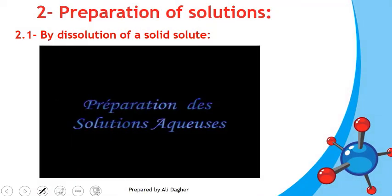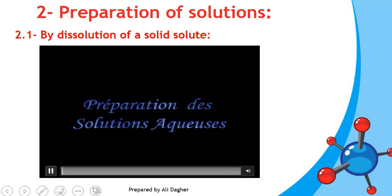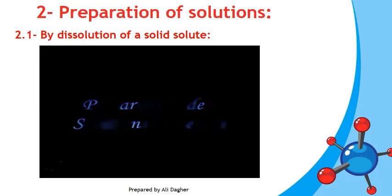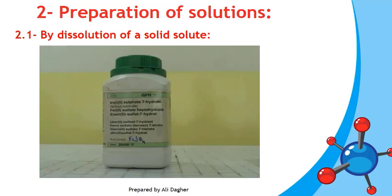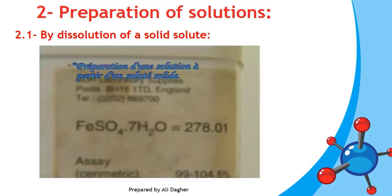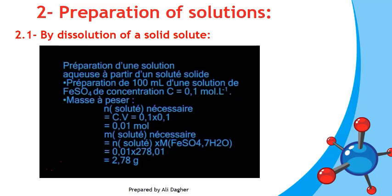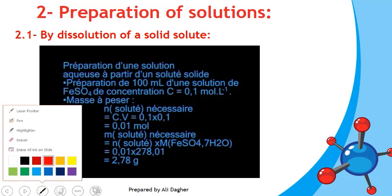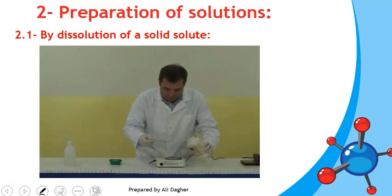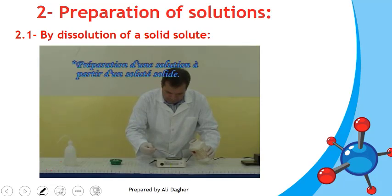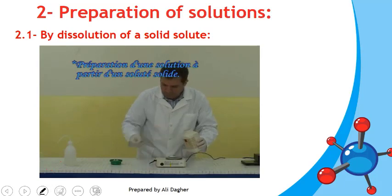This video will show us the preparation of a solution from a solid solute. The solid solute is iron(II) sulfate. First, we calculate the mass needed. We need to prepare 100 mL of a solution of concentration 0.1 mol per liter. We then weigh the calculated mass using a precision balance, watch glass, and spatula.